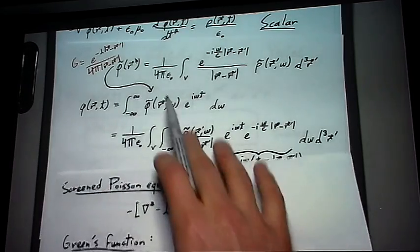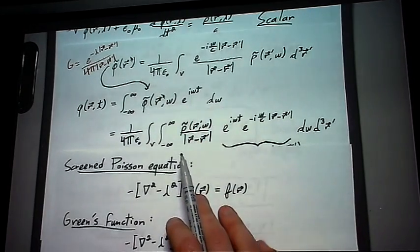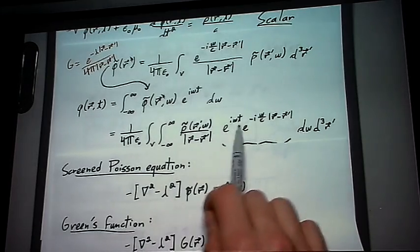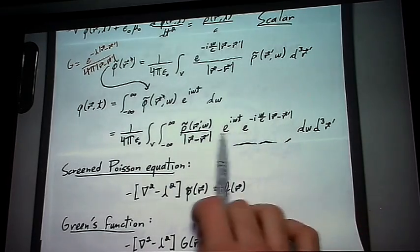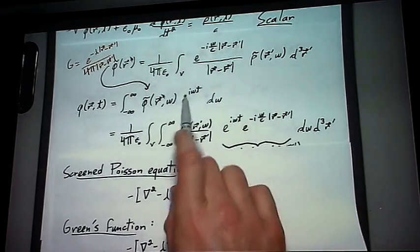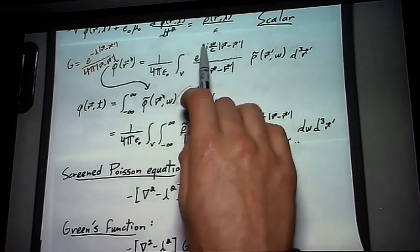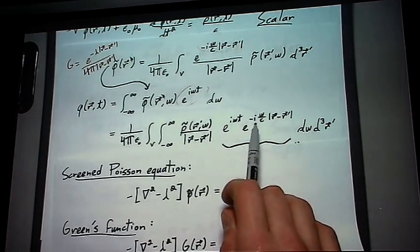Now again, it gets messy, but luckily we can simplify it, so we're going to actually be combining our two exponentials here, so our e to the i omega t with our big complicated exponential right here.